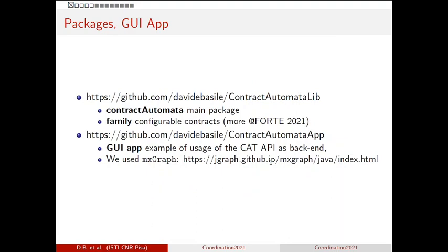In the implementation, we have two different repositories to enforce separation of concerns between the API — the library of the tool — and the graphical representation. We are concerned with the quality of the implementation in terms of lines of code, performance, and reusability by other researchers in coordination. In particular, the contract automata lib repository has two packages: contract automata, the main package we will discuss, and family, which contains configurable contracts to be discussed in the fourth talk this year.